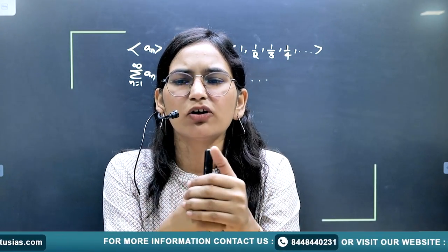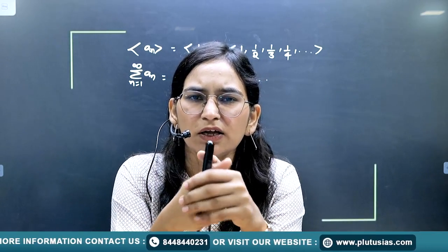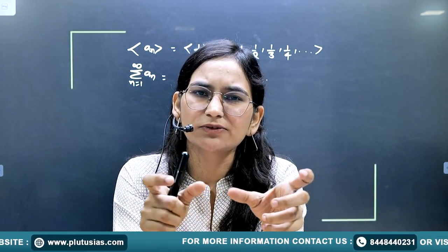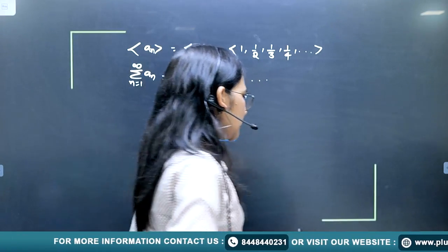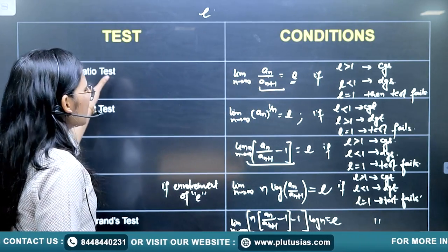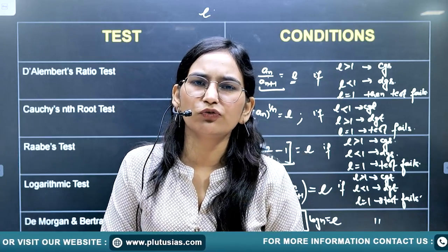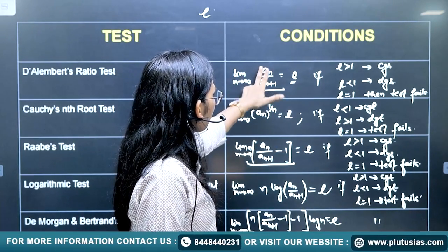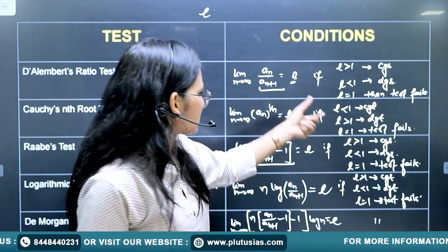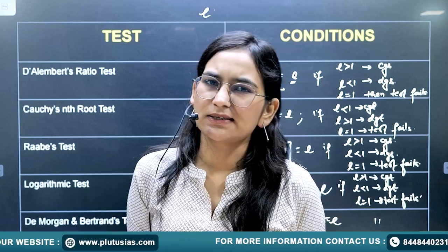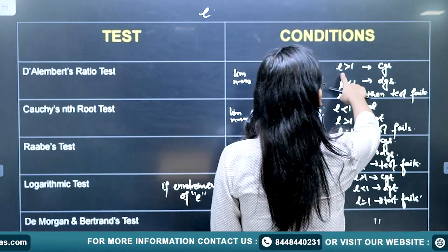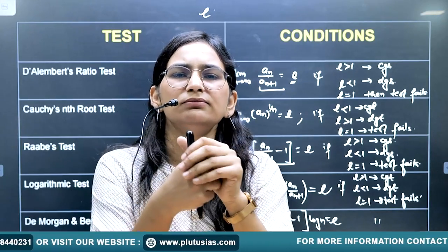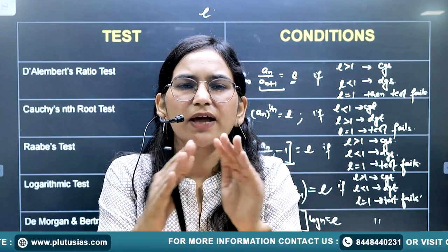To determine whether a given series is convergent or divergent, we have 4 to 5 tests. Let's summarize them together and implement them under one example. The first is D'Alembert's Ratio Test: find the limit as n approaches infinity of a_n / a_{n+1}, and call it l. If l > 1, the series converges; if l < 1, the series diverges; if l = 1, the test fails to give any result.